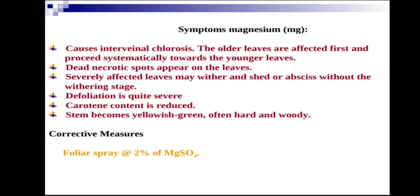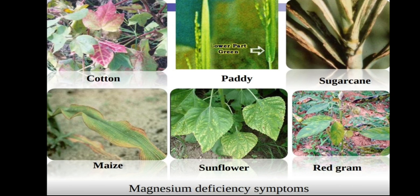Corrective measure for magnesium deficiency is spraying two percent magnesium sulfate (MgSO4). Important symptoms of magnesium deficiency to remember are dead necrotic spots on the leaf, reduced carotene content, and stem becoming hard and woody with a yellowish-green color.